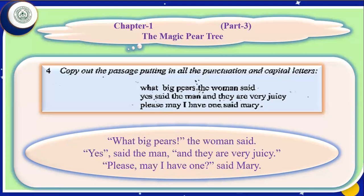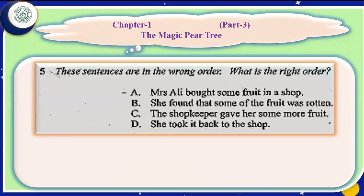In fact, it is exercise 5. This is exercise 5, exactly as it is written in your book. The instructions say: these sentences are in the wrong order — what is the right order? Here we have four sentences, written in wrong order, labelled A, B, C, D. We have to change their order.